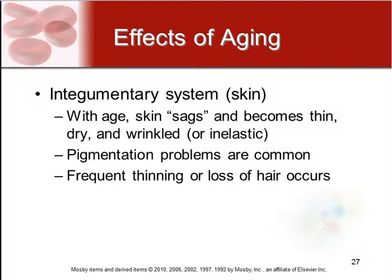As we age, skin sags. This is because it becomes thinner and drier and loses its elasticity, as well as the fat and muscle layers located underneath. Pigmentation problems become more common in the older adult, and frequently there is thinning or loss of hair.